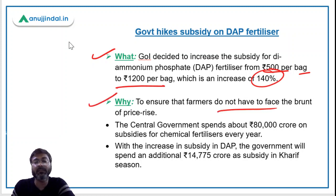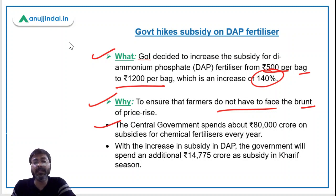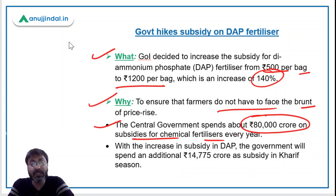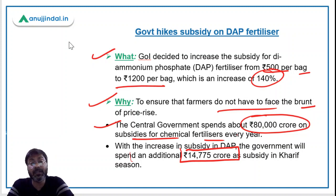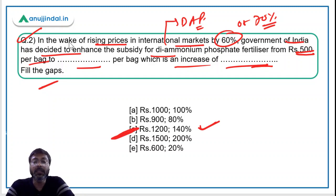This is obviously to ensure that farmers do not have to face the burden of rising prices in the international market, where there has been a 70 percent increase. The central government currently spends about rupees 80,000 crore on subsidies for chemical fertilizers every year, and this additional subsidy will add rupees 14,775 crore to government expenditure. So the correct answer is Option C: ₹1,400 per bag with a 140 percent increase.